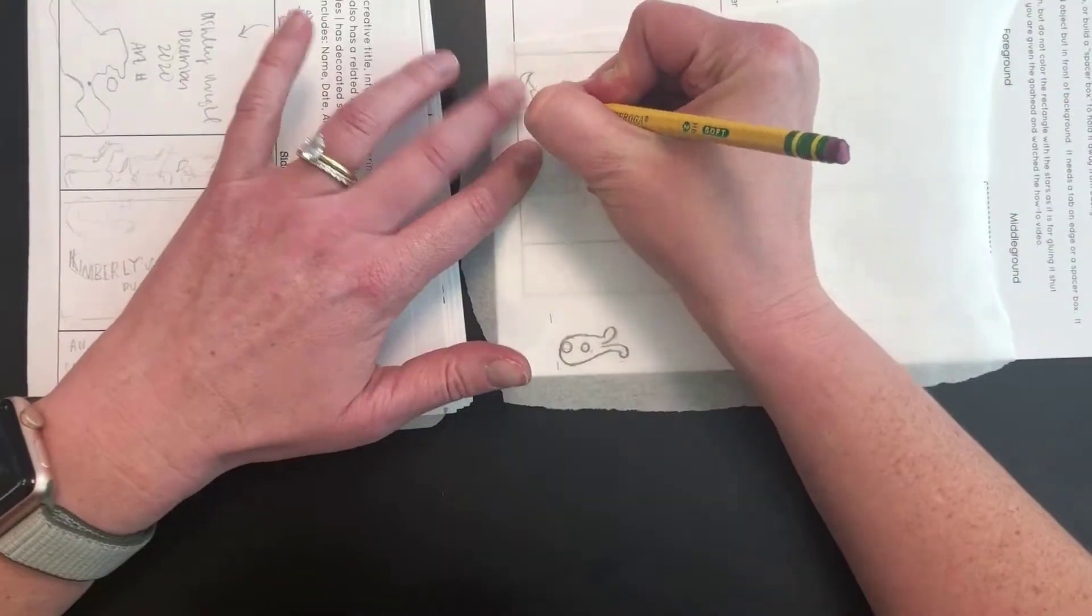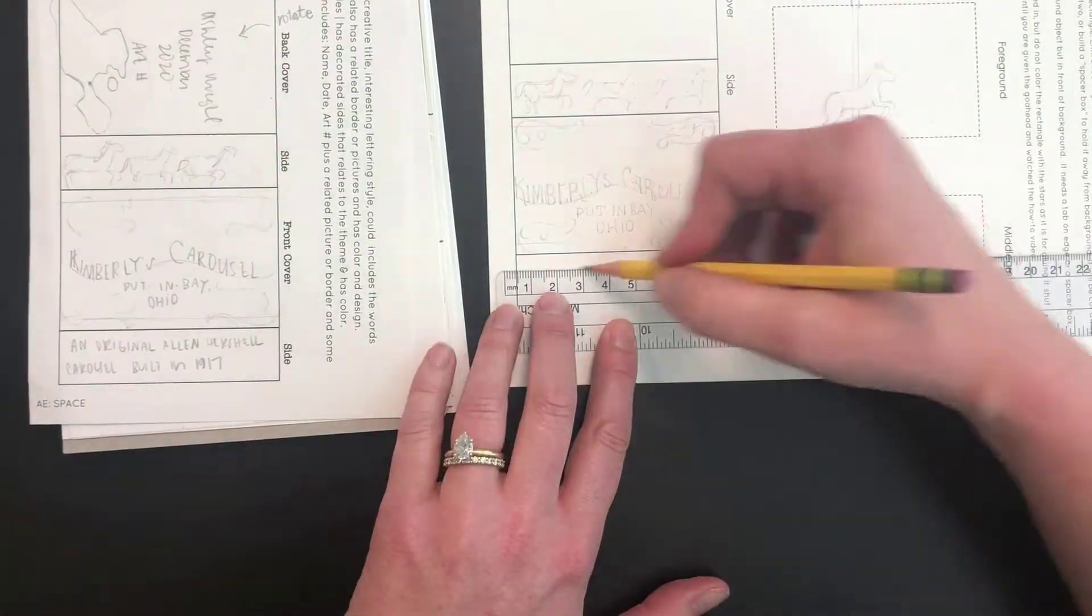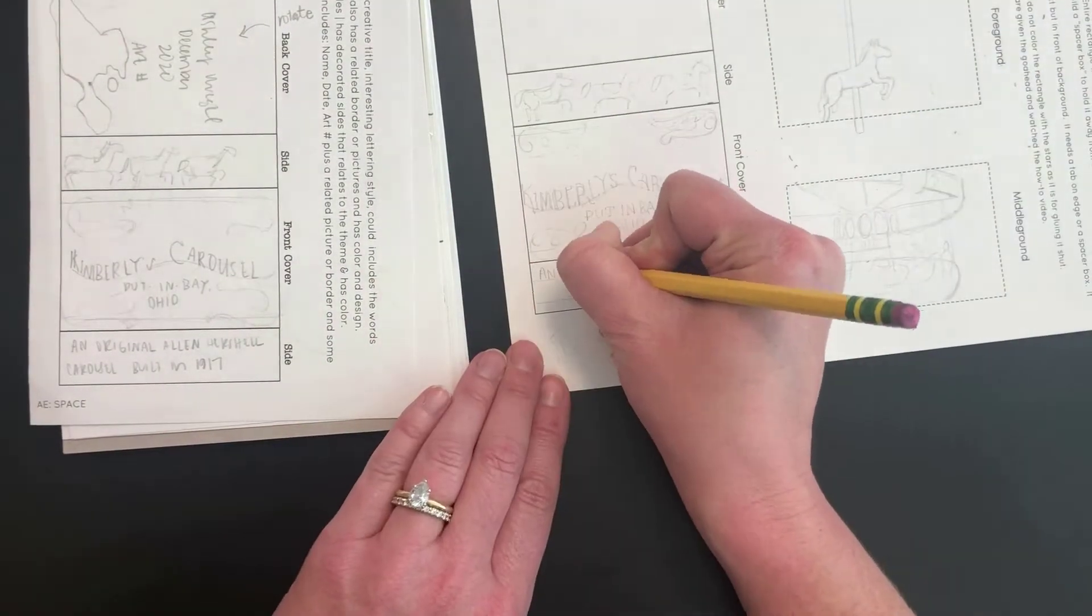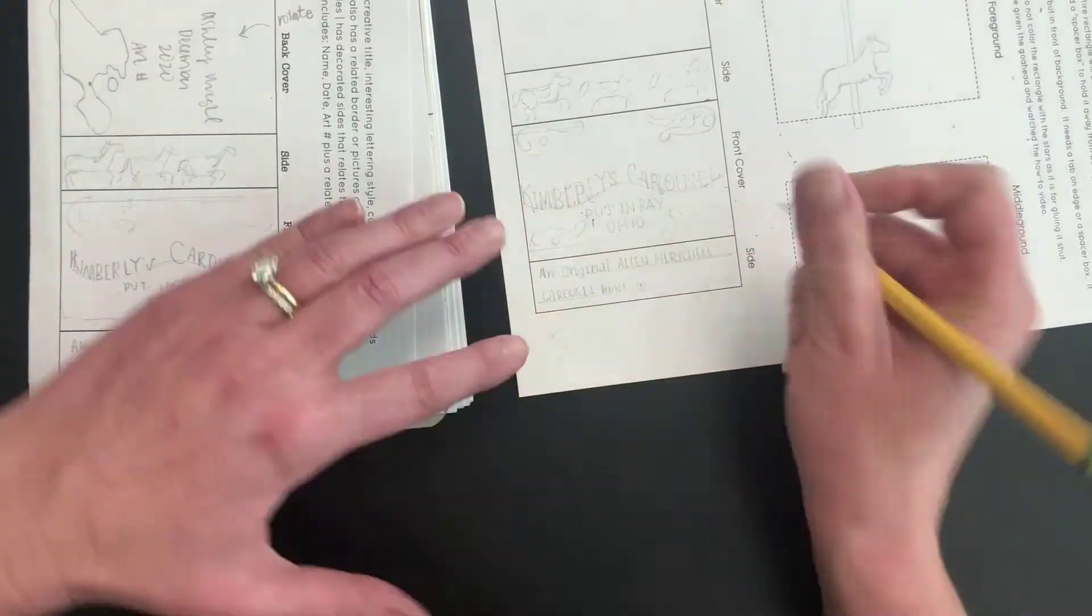The back cover needs to have your name, date, and art number, plus more drawings, more color. Don't be repetitive with your work. We don't want to see the same thing everywhere. Be creative with how you're going to make a cohesive piece of art.